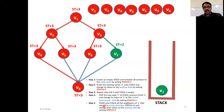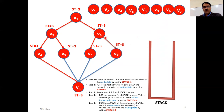Stack is not empty, so pop the top node — V7. Traverse and visit V7. Change status to three. Push all neighbors of V7 that are in the ready state onto the stack.